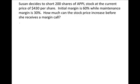First, we need to figure out how much margin she put forth in dollars when she first shorted her position. She shorted 200 shares at $430 each, so the entire position cost $86,000. She had to put up 60% of that, so that's $51,600.